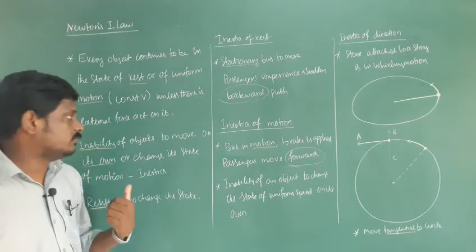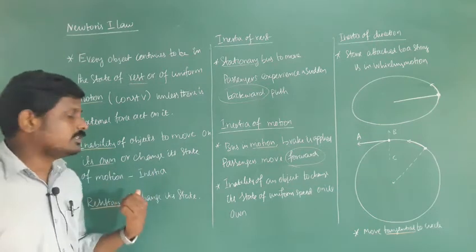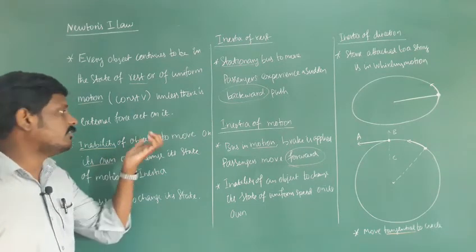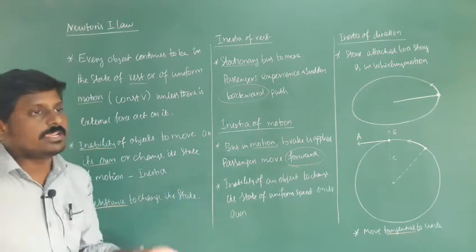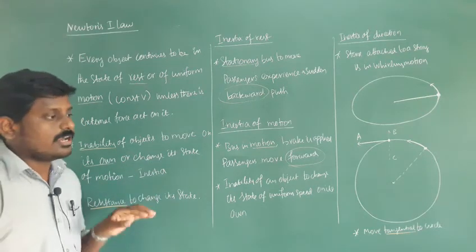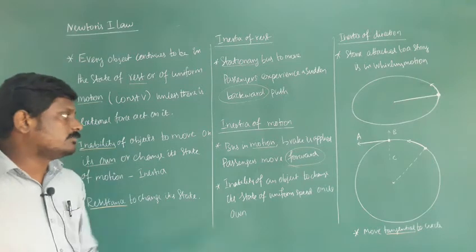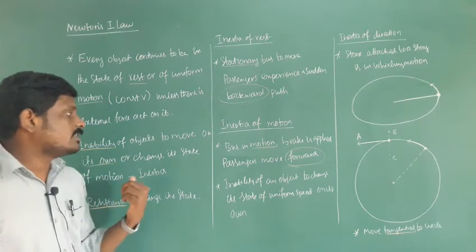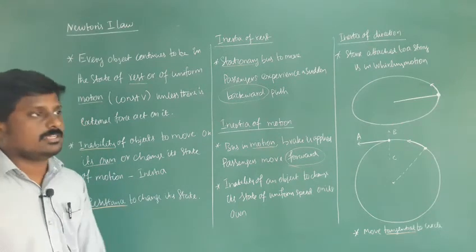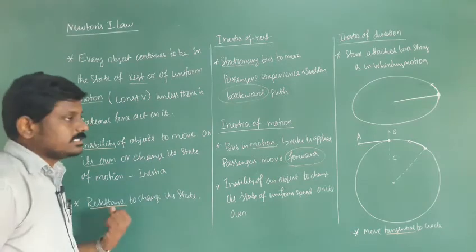Next, inertia is the inability of an object to move on its own or change its state of motion by itself. For example, a book at rest will not move on its own — we need to apply some force. Similarly, a car in motion does not come to rest until we apply a force against its movement. Inertia is simply the resistance of an object to change its state of rest or uniform motion.